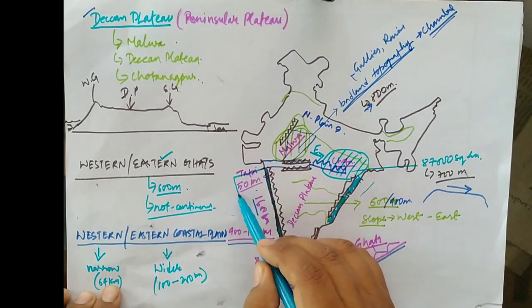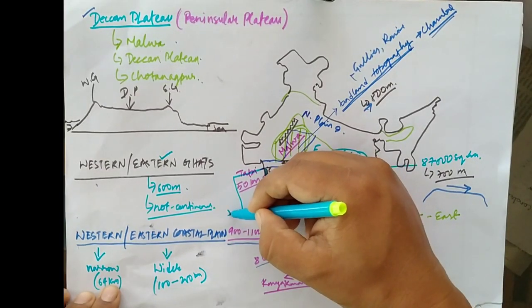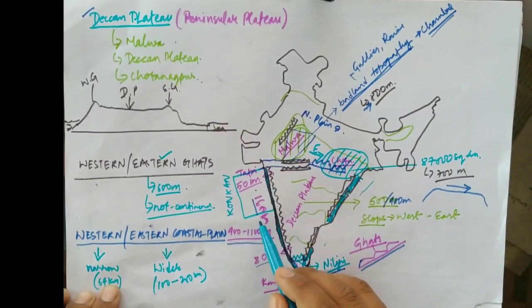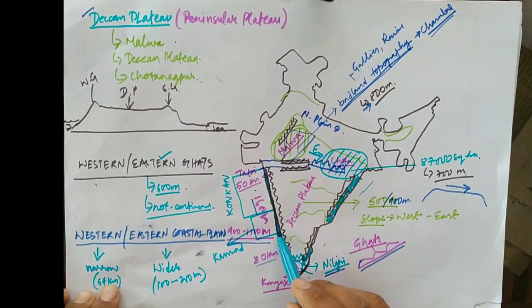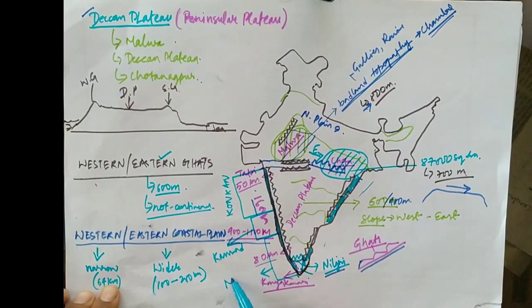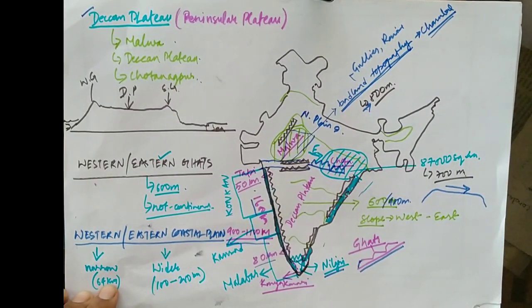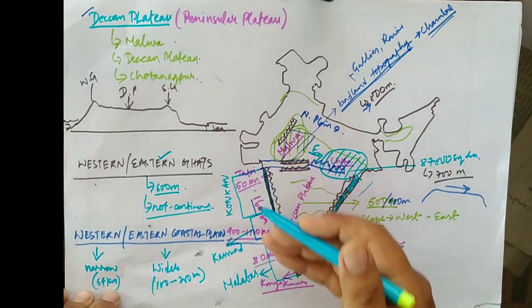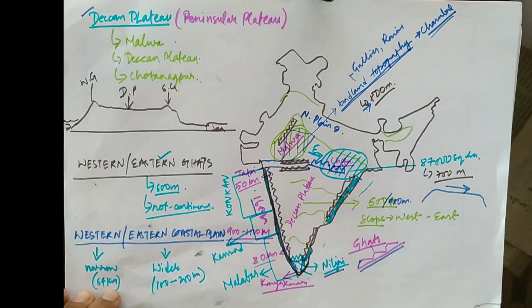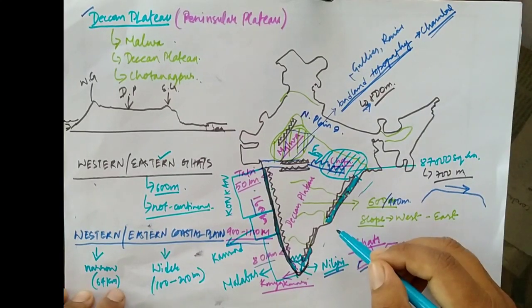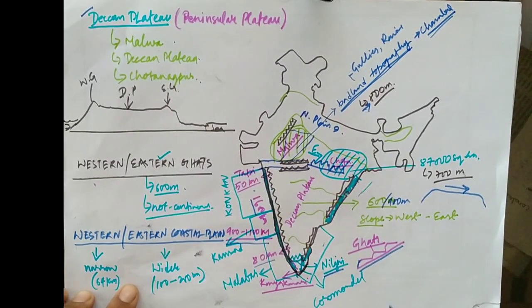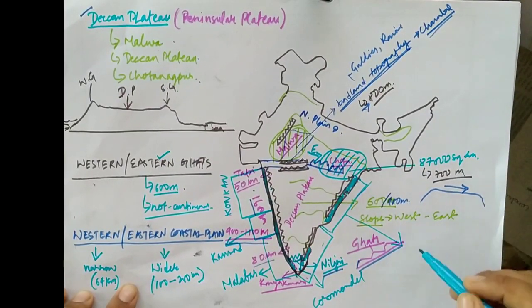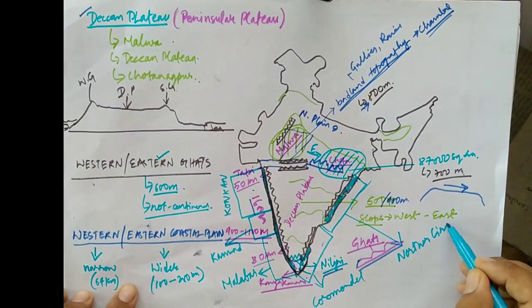The Western Coastal Plain is divided into parts: the northern part is known as the Konkan Coast, then there is a small plain between the Konkan Coast and the Malabar Coast known as the Kannad Coast, and towards the south is the Kerala coast known as the Malabar Coast. A striking feature of the Konkan Coast is the presence of river estuaries, while the Malabar Coast has lagoons and backwaters. On the Eastern Coastal Plain, the southern half is known as the Coromandel Coast and the northern half up to the state of Odisha is known as the Northern Sircar.